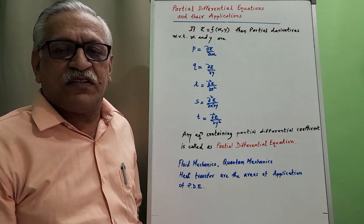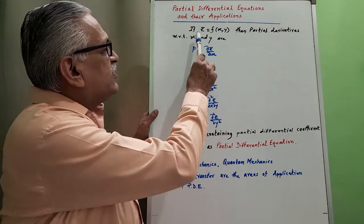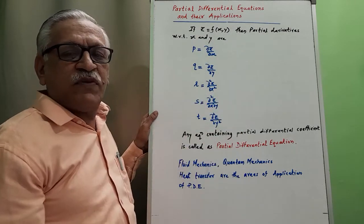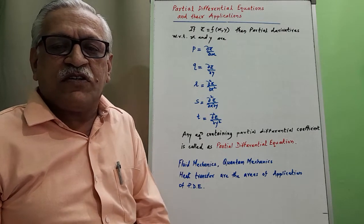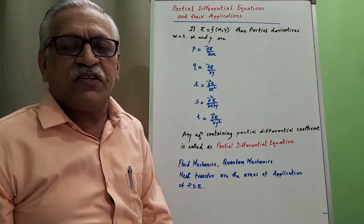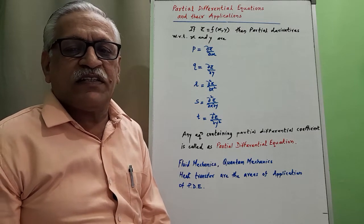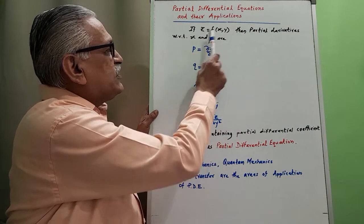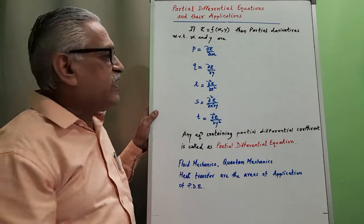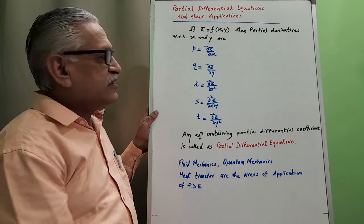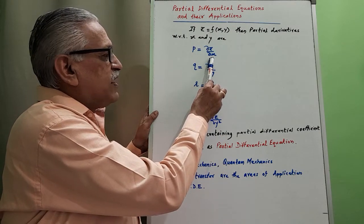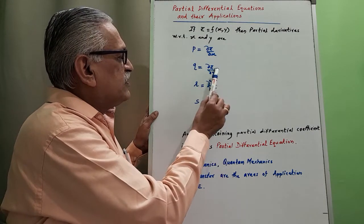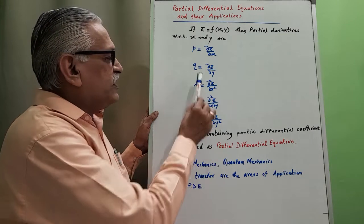Then we think: what is the partial differential coefficient? For that, we consider z as a function of two independent variables x and y. Whenever it is a function of more than one independent variable, whatever derivatives we obtain are called partial derivatives. If we differentiate this function with respect to x, we get dou z by dou x, the partial derivative of z with respect to x, which we denote as p. Dou z by dou y we denote as q.